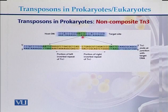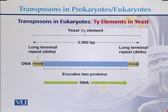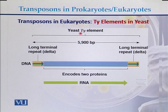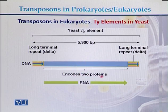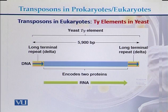The sequences of the left and right inverted repeats are present on both ends of the non-composite transposon. In eukaryotes, an example is the Ty element in yeast. The Ty element has a transposase-encoding core region in the middle with two portions, and on both sides there are long terminal repeats (LTRs) approximately 5,900 base pairs in total.